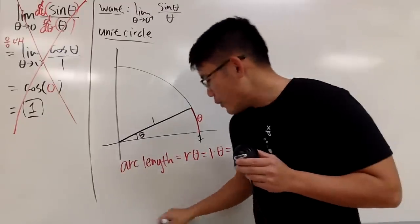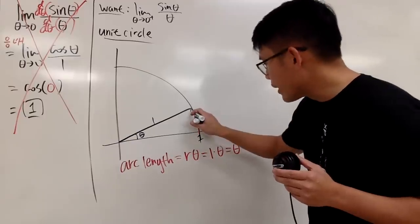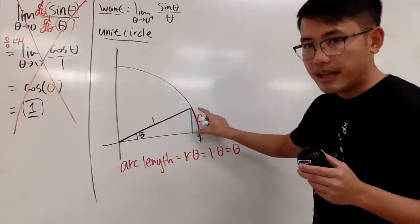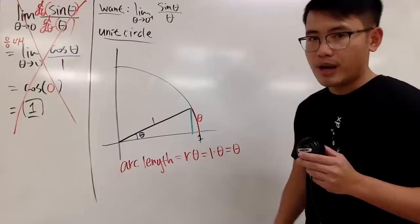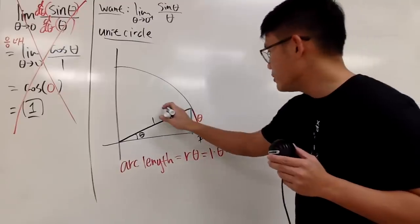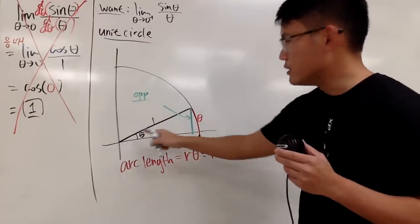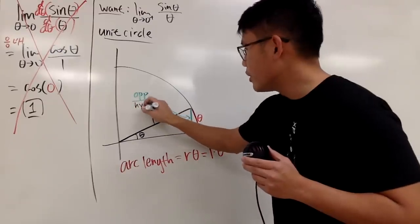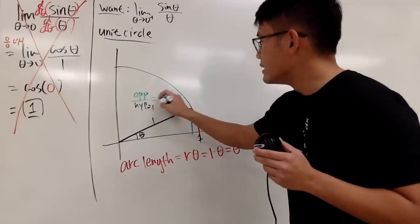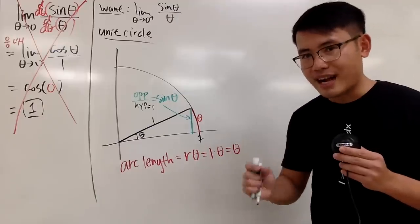Next, starting at the point on the circle, I'm going to draw a line straight down so we can form a right angle and create a right triangle. In this right triangle we know the hypotenuse is 1, and this vertical side is the opposite side. Opposite over hypotenuse is sine, so this length is just sine theta.